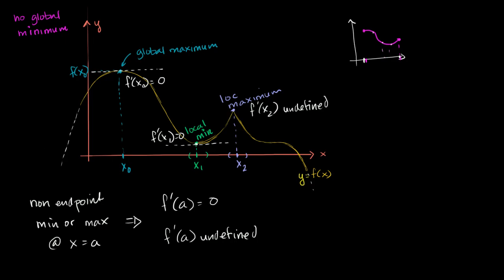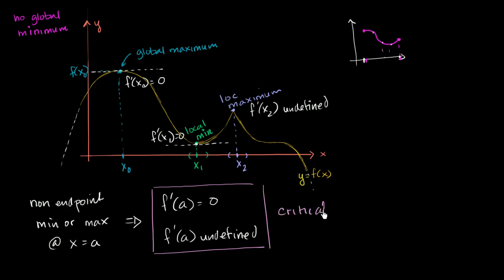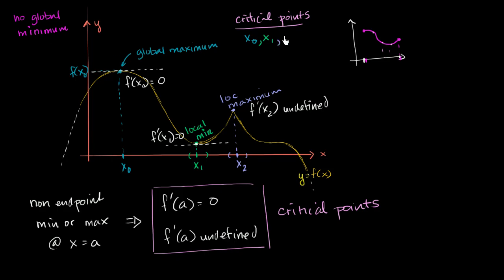We have a word for these points where the derivative is either 0 or undefined — we call them critical points. For this function, the critical points are x₀ and x₁, where the derivative is 0, and x₂, where the derivative is undefined. So if we have a non-endpoint minimum or maximum point, then it's going to be a critical point.